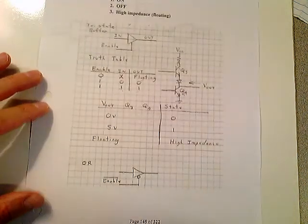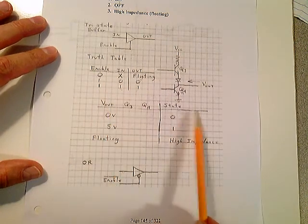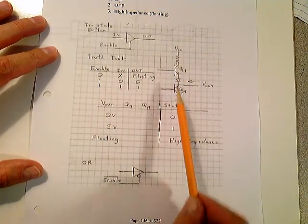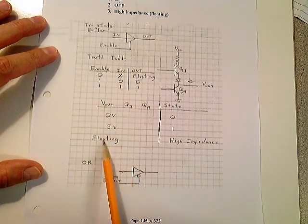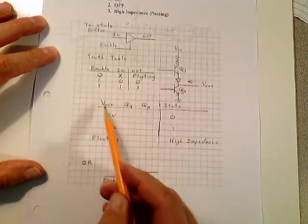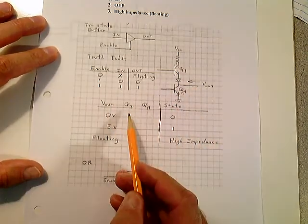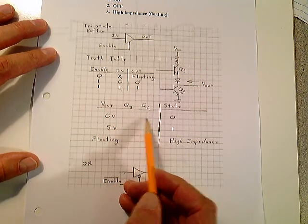So what happens is, let's go back to here. Look at it. We have the enable in here. And here's a table. And we have our tri-state outputs. The tri-state devices have additional circuitry that allows for a floating output. So let's say we want an output to be low. V out to be zero volts here.